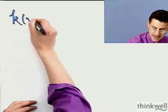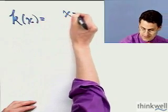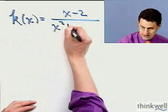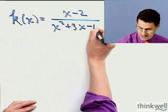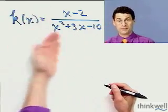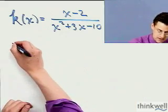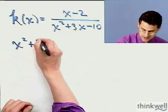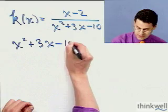And let's do one last one together. K of x equals x minus 2 over x squared plus 3x minus 10. So again, I see it's a fraction, so all I care about is when the bottom is 0 and I have to avoid those points. So x squared plus 3x minus 10 equals 0.